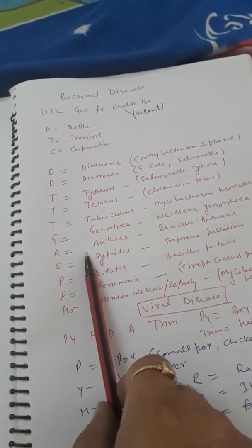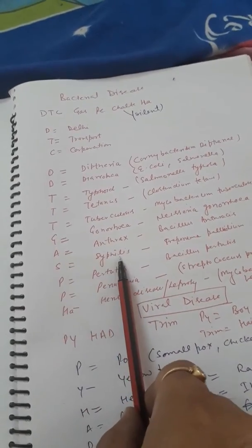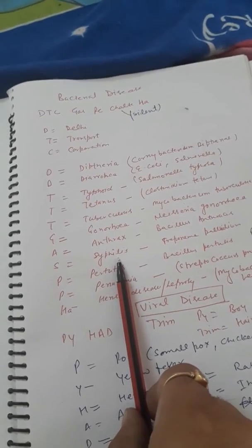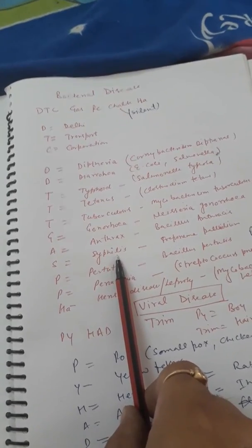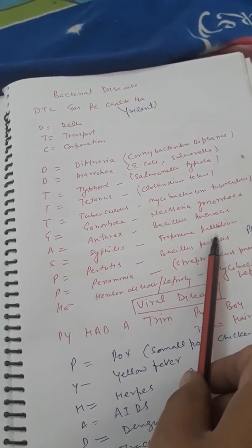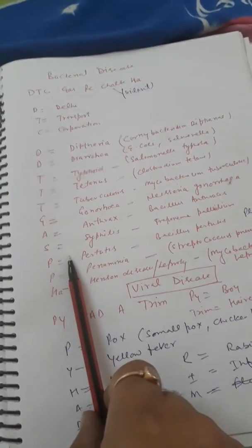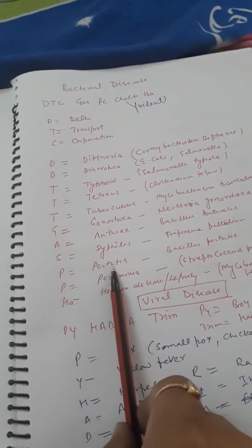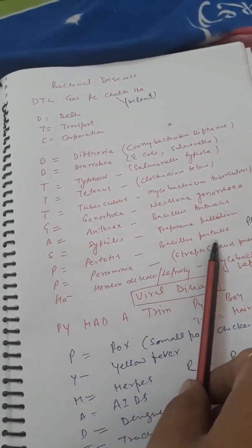Ab aa jata hai aapka S. S joh hota hai that is S represents Syphilis disease. Yeh sexually transmitted disease hai. Isko joh cause karta hai Treponema pallidum cause karta hai. P - P joh aapka Pertussis. Bacillus pertussis disease cause karta hai.